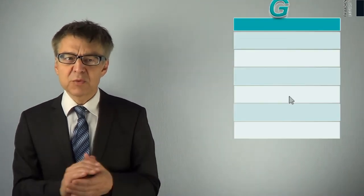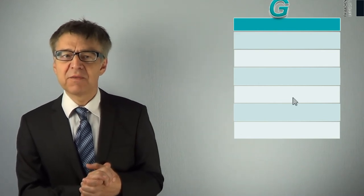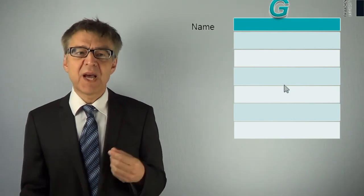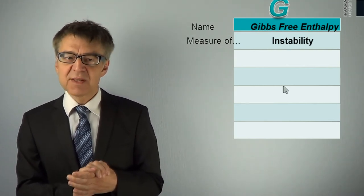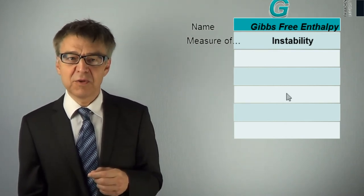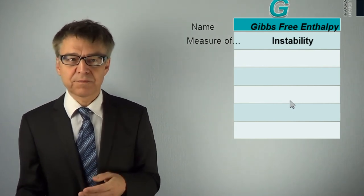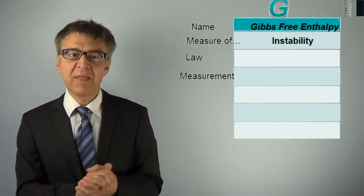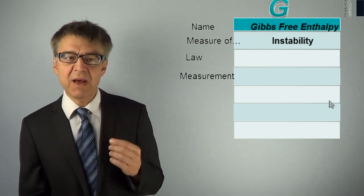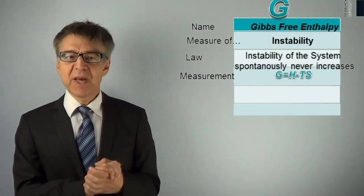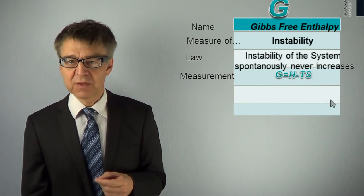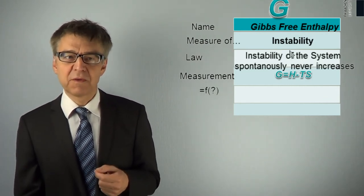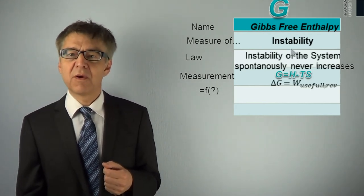If we combine enthalpy and entropy in an appropriate manner, we get the extremely useful state variable G, Gibbs free energy or free enthalpy. G is a measure for the instability of a system. Unlike with enthalpy and entropy, G is applicable to a process without considering the entire universe. We can confine ourselves to the system. The free enthalpy G, a measure of instability, will never spontaneously increase. G may be calculated by this equation from H and S. This equation is often called the Gibbs-Helmholtz equation. G is measurable as useful work that would occur in a reversible process.